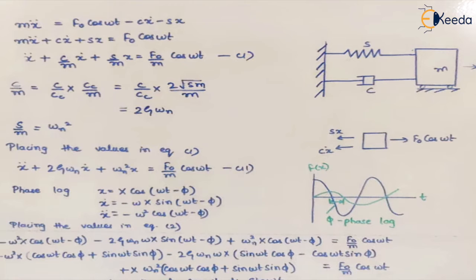We have taken a simple mass-damper-spring lumped system, and on this an external force is applied. The force we are using is F₀ cos(ωt) — we are taking into consideration a harmonic force. We draw the free body diagram and write the equation of motion.